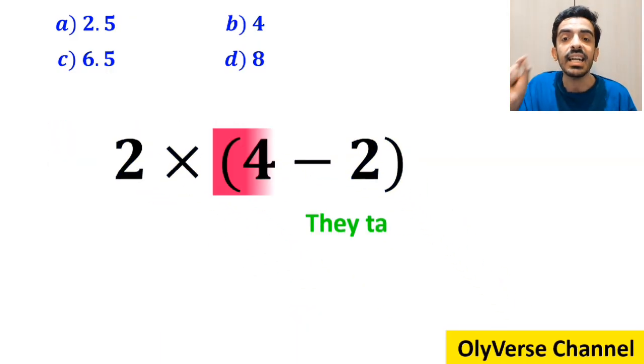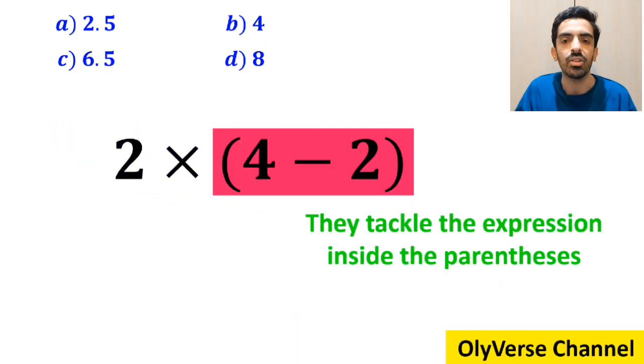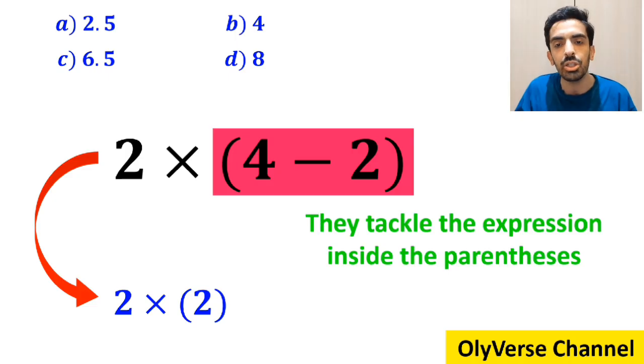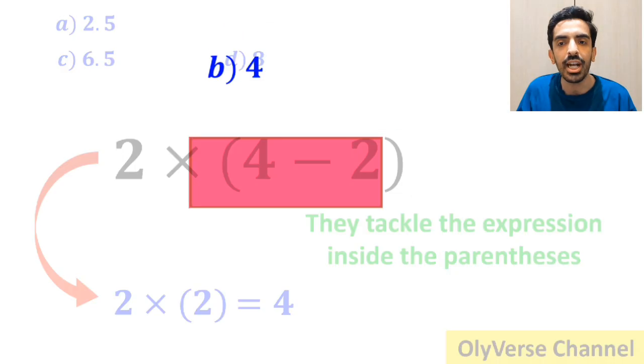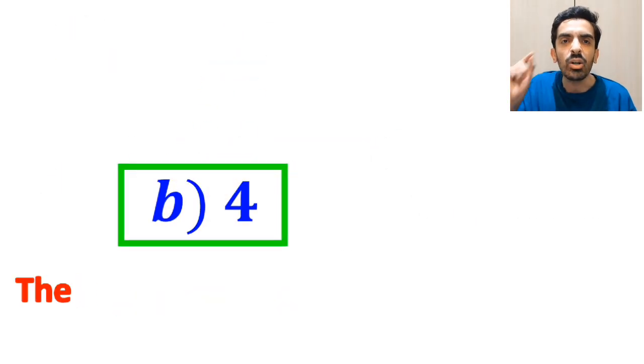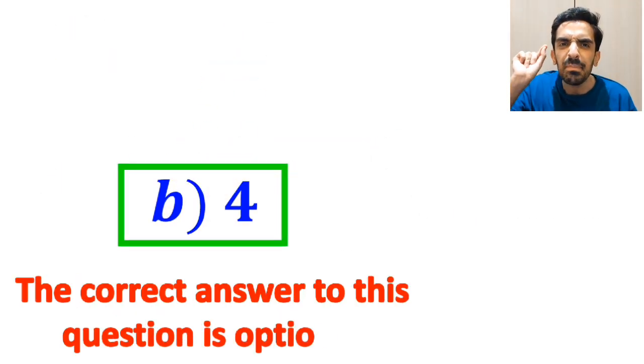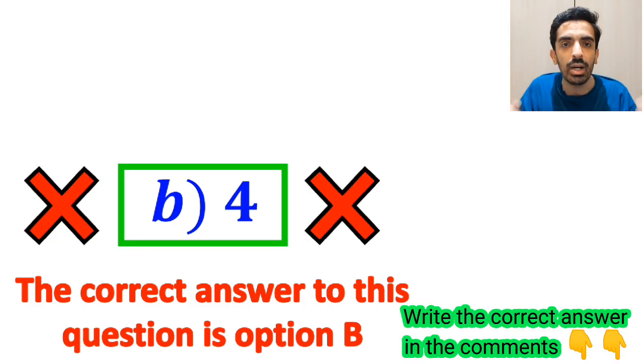In the final step, they tackle the expression inside the parenthesis and write it as 2 times 2, which ultimately gives them the answer 4. Then, without any hesitation, they quickly say that the correct answer to this question is option B. However, it's not the correct answer to this question.